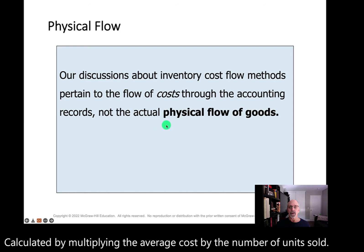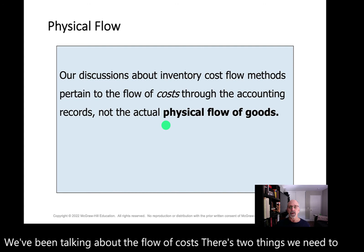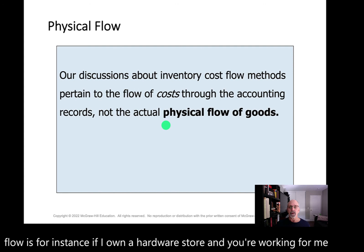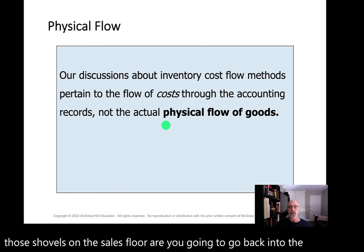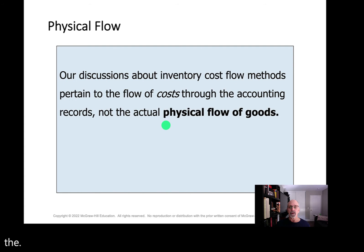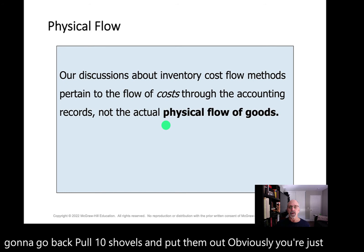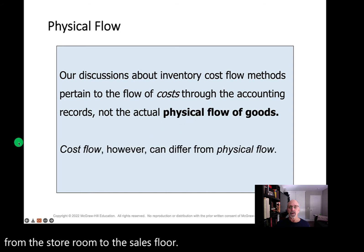Now we've been talking about the flow of costs. There are two things we need to look at: there's a physical flow and a flow of cost. An example of physical flow is — if I own a hardware store and you're working for me and I ask you to go into the storeroom and pull out 10 shovels and put those shovels on the sales floor — are you going to decide which was the oldest one we bought? Or are you just going to pull 10 shovels and put them out? Obviously you're just going to pull 10 shovels. That's the physical flow of goods from the storeroom to the sales floor. The cost flow is probably different than the physical flow.